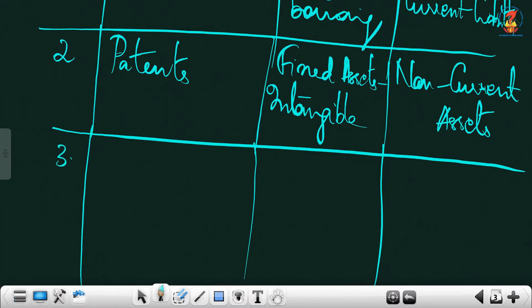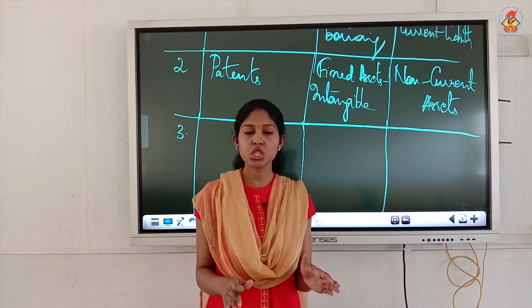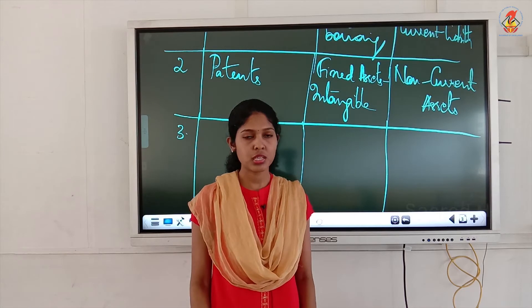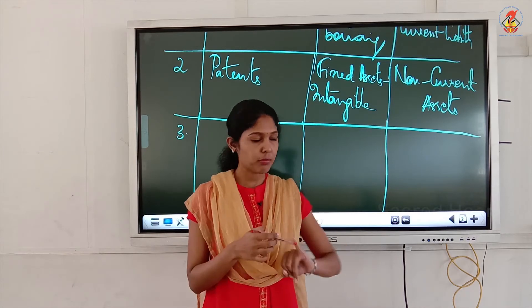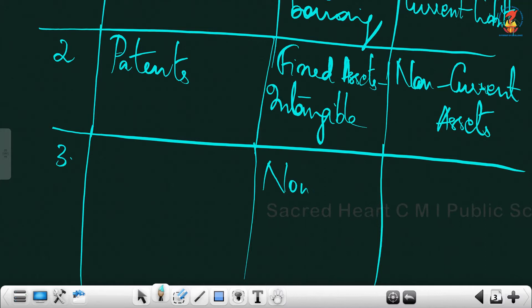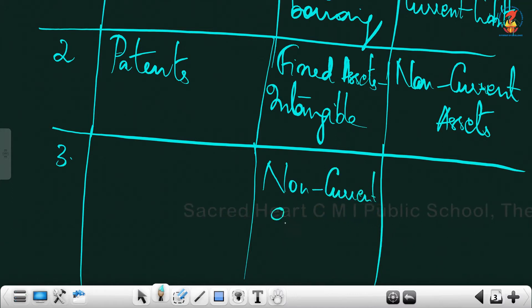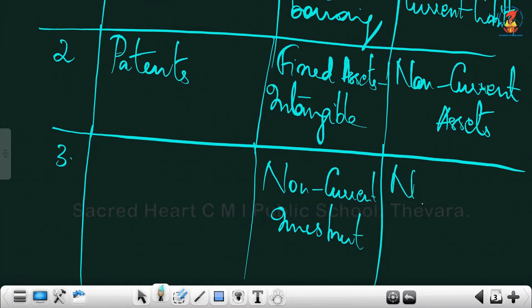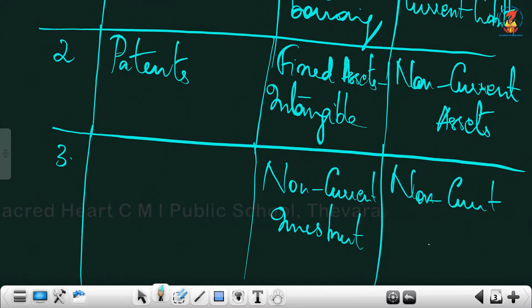Third one: investments. If nothing is mentioned, treat it as a long-term investment. The subhead will be non-current investments and the major head will be non-current assets, as shown in the balance sheet format.